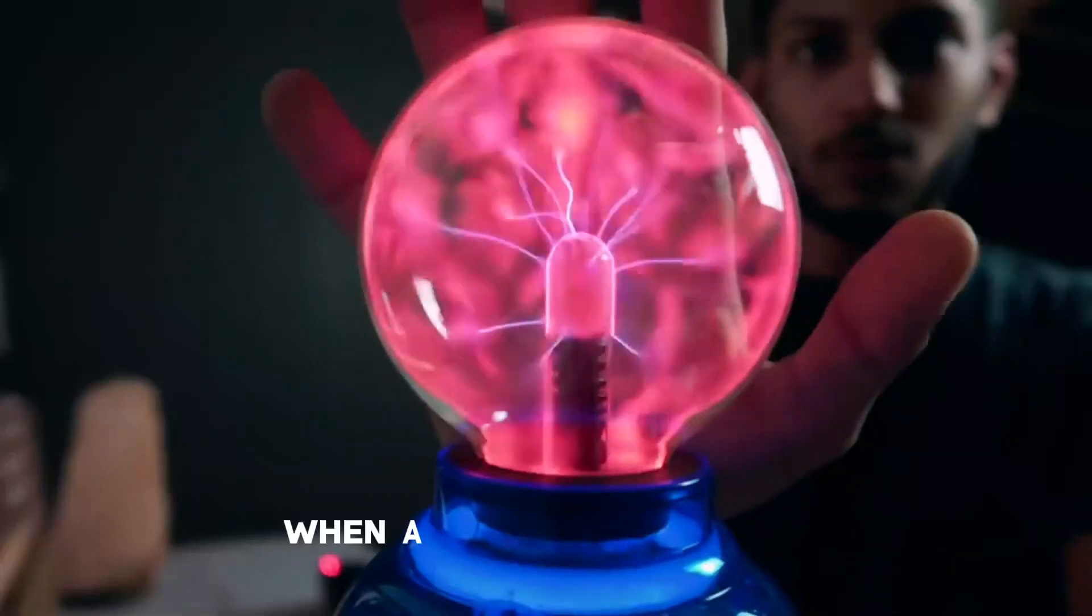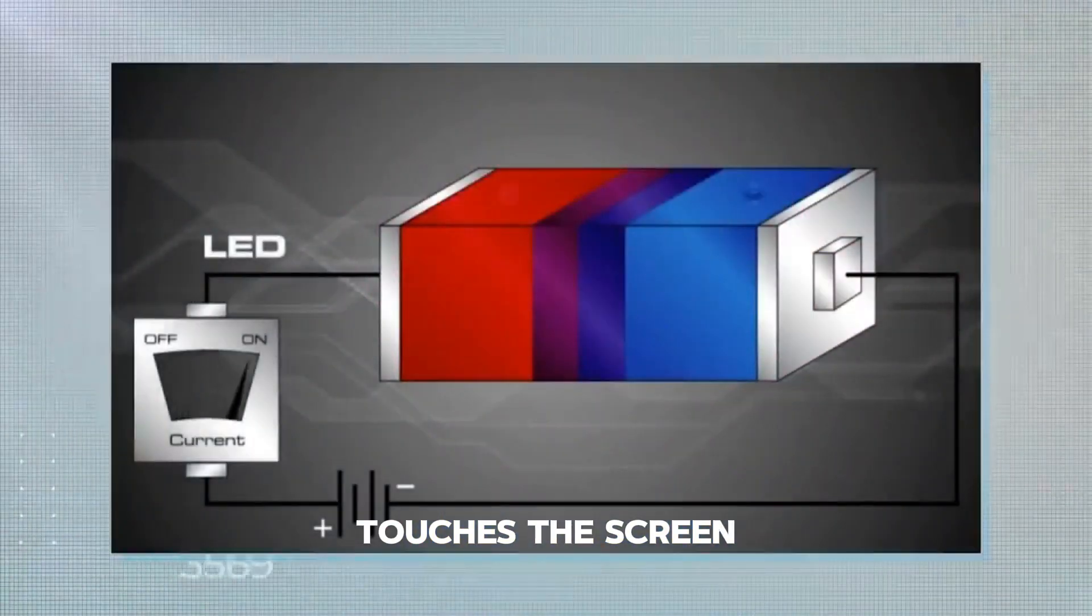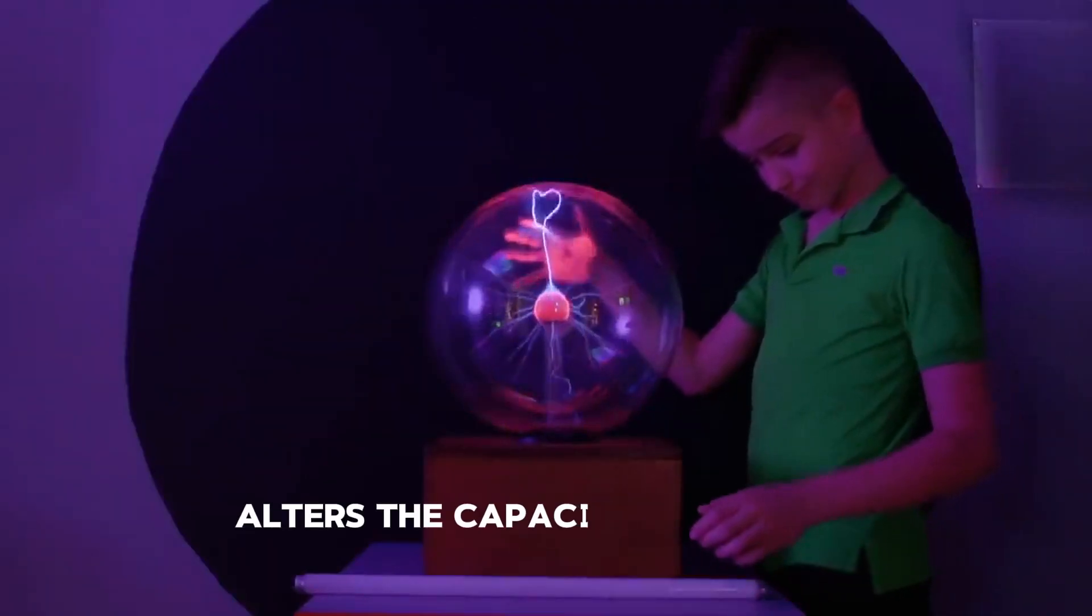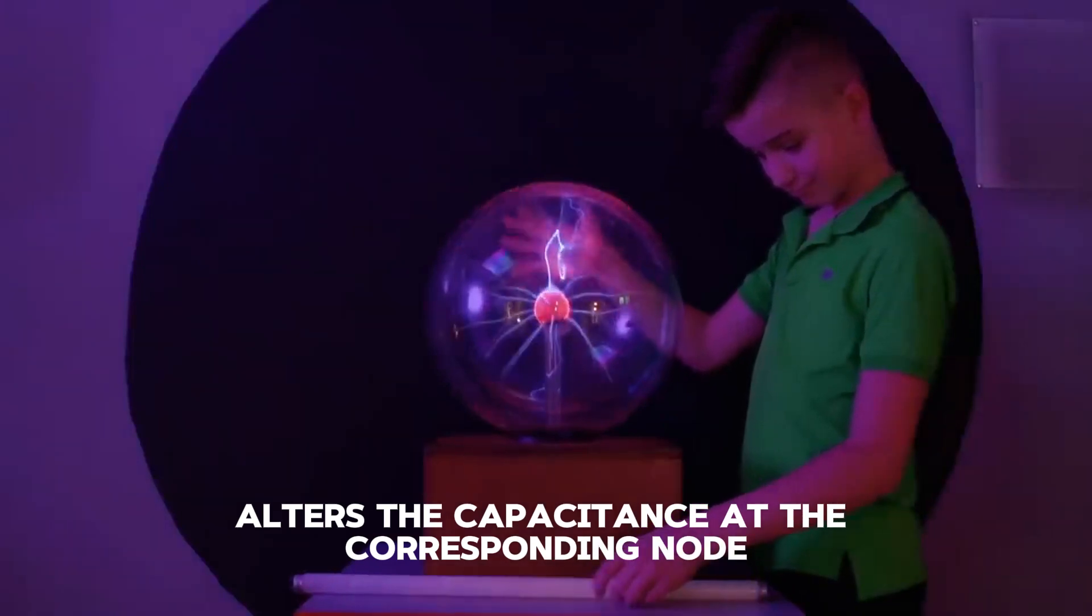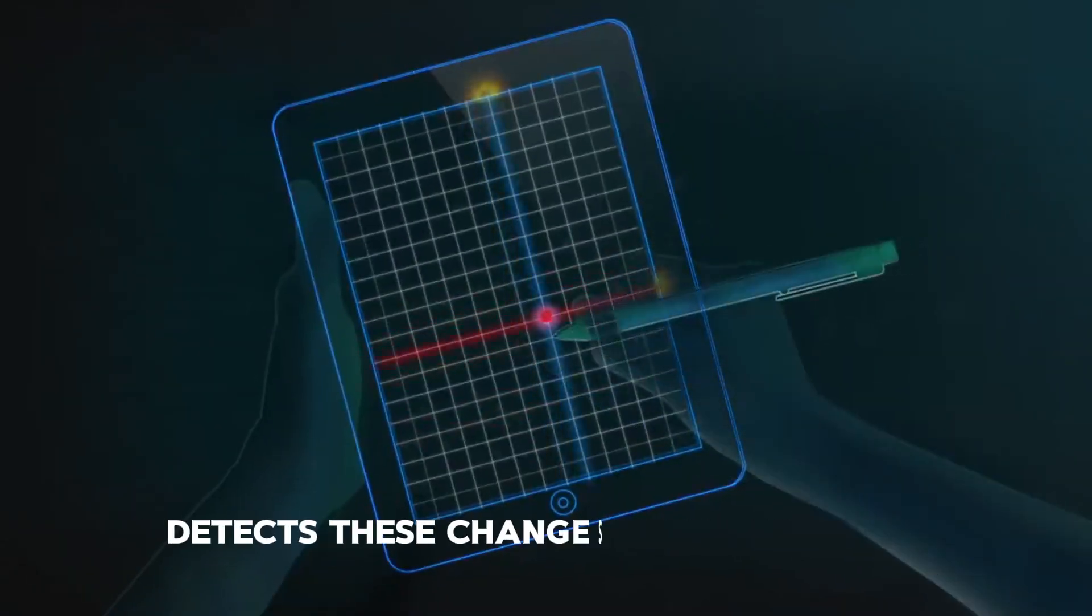Capacitance change. When a conductive object, like a human finger, touches the screen, it disrupts the electric field at that specific point. This disruption alters the capacitance at the corresponding node. The capacitive touchscreen controller detects these changes in capacitance.